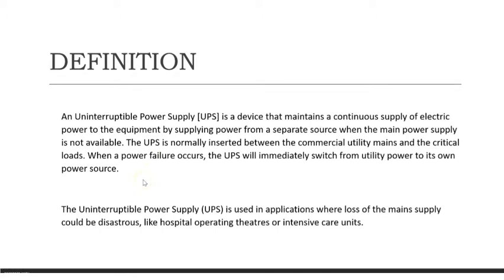The UPS is inserted between the equipment and the main supply. When a power failure occurs, the UPS will immediately switch from the utility power to its own power source. So in both cases — when the main supply is on and when it is off — the equipment or the load will get power. That is the function of a UPS.